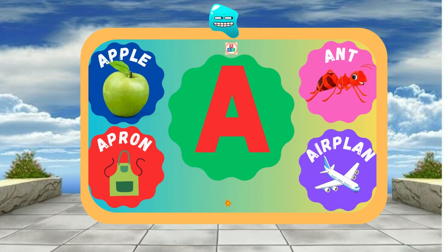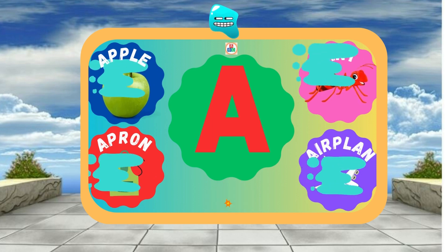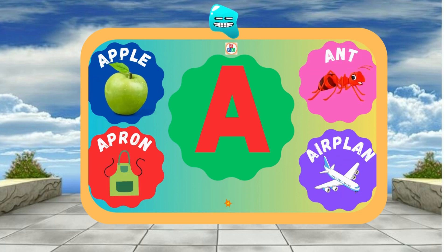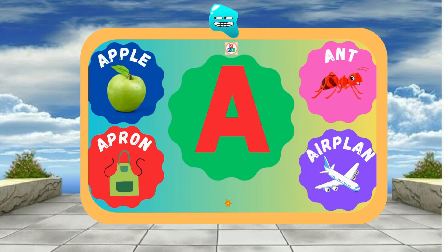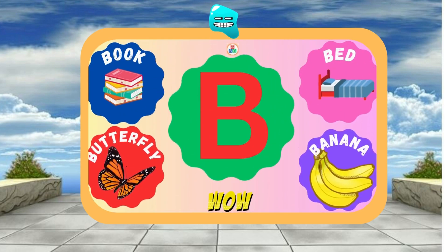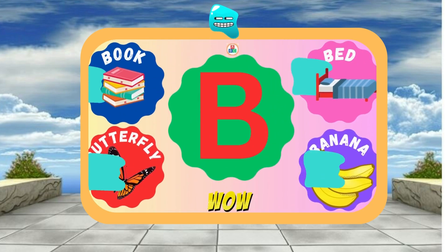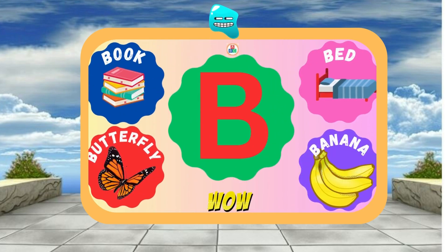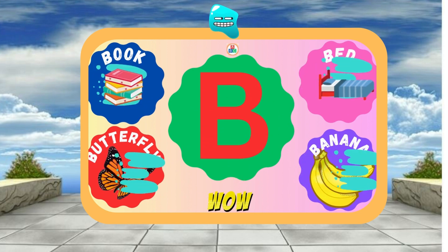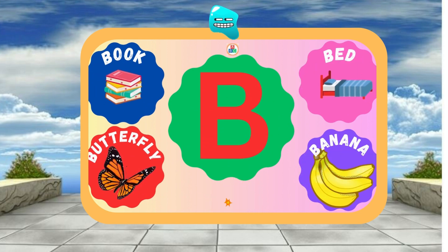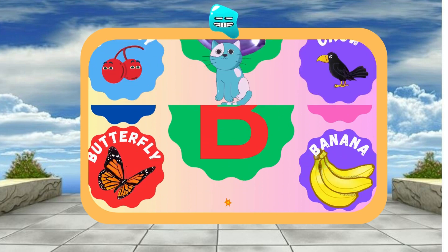A is for Apple — A, a, Apple. A is for Ant — A, a, Ant. B is for Book — B, b, Book. B is for Bed — B, b, Bed.